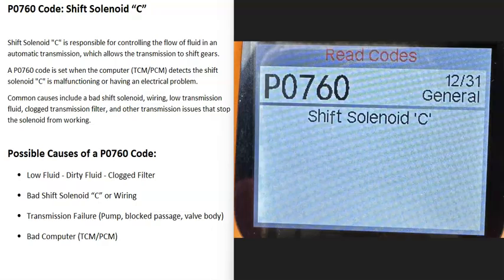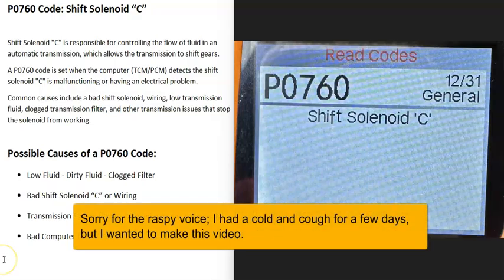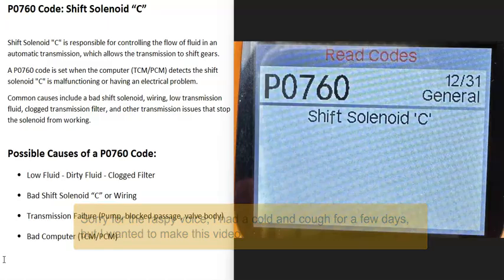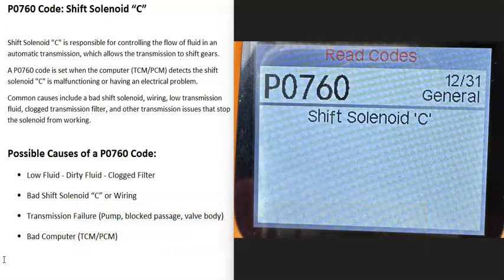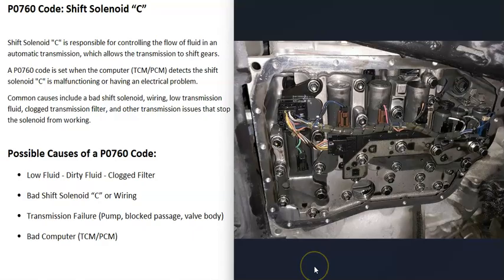Today I'm talking about a P0760 code — what it is and how you could go about fixing it. A P0760 code is a shift solenoid C code. Basically, transmissions have a lot of solenoids built into them, and these solenoids allow the computer to control the flow of fluid through the transmission. This allows it to shift gears at the right time. When you get a P0760 code, the computer is seeing a problem with that shift solenoid C, and it's got to be troubleshot to know why.